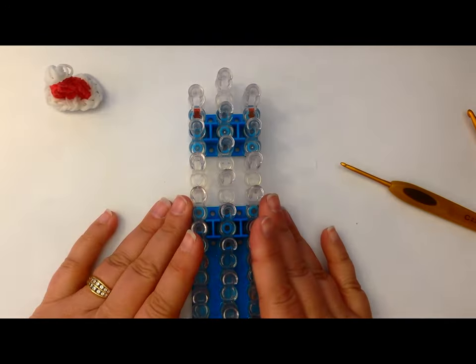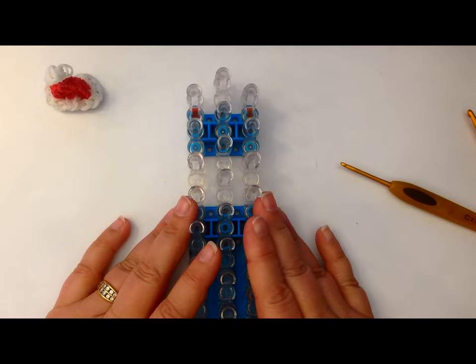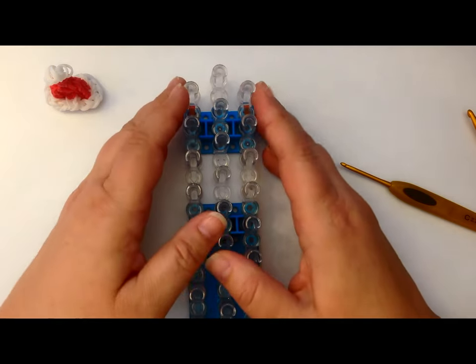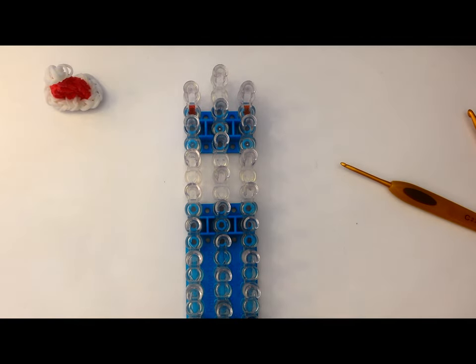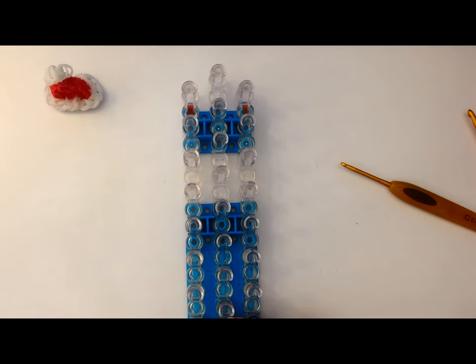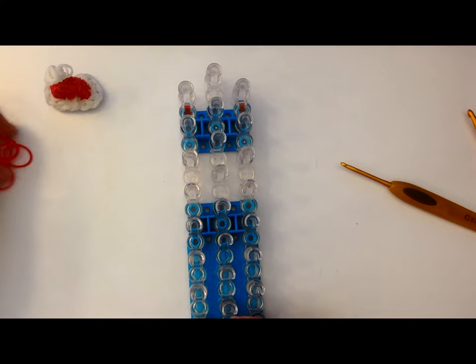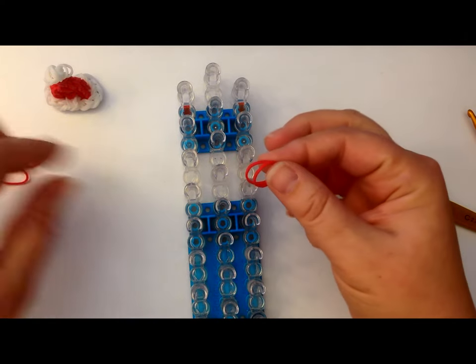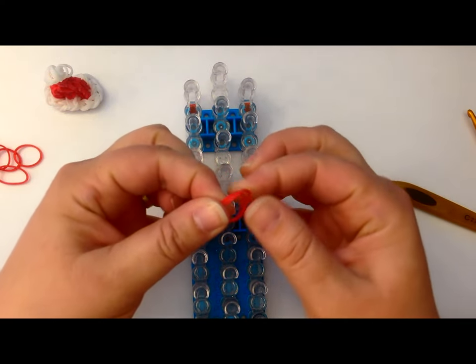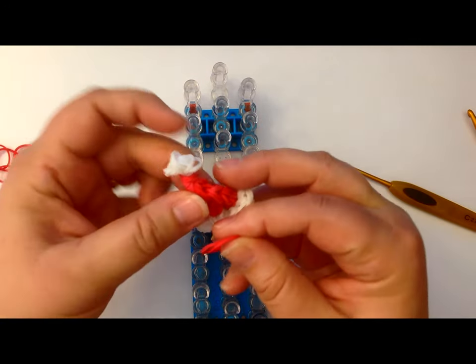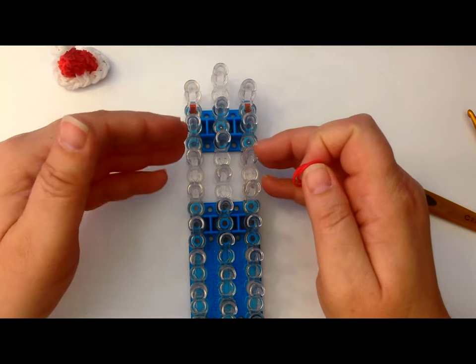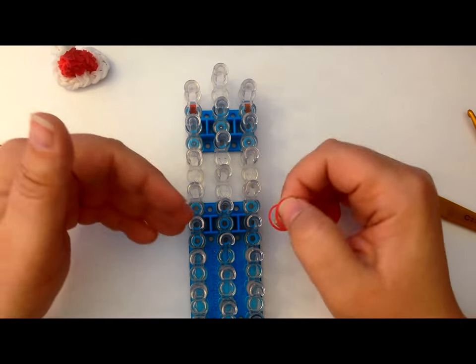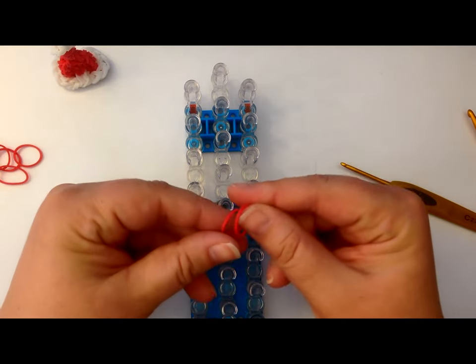We're going to use a single loom. It's going to be in the offset configuration, which means that columns one and three are slightly lower than column two. We're going to be double banding, which means you take two bands and you place them on the pegs together at the same time as if they were one. That gives it a more robust and solid feel to it. We're going to have the open part of the peg or the arrow facing towards us. Let's get started.